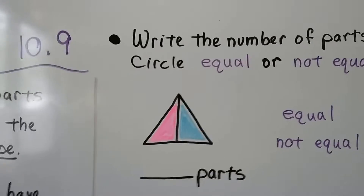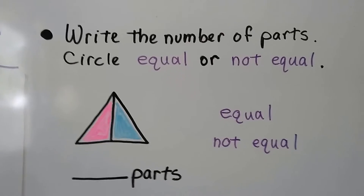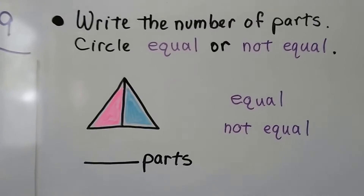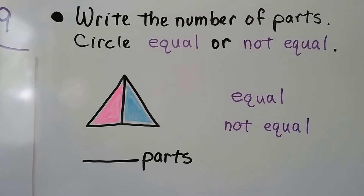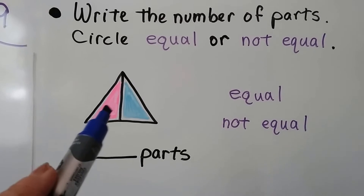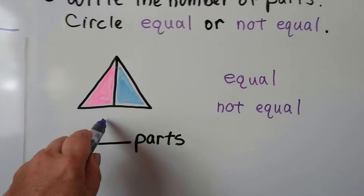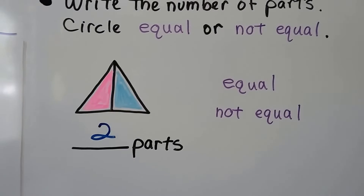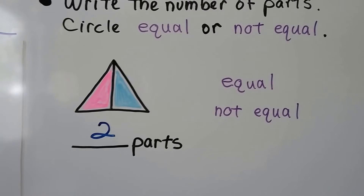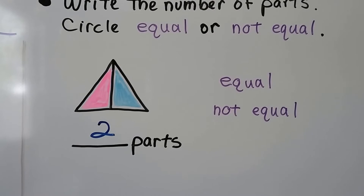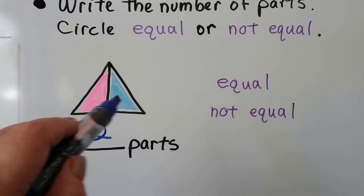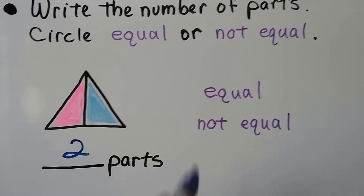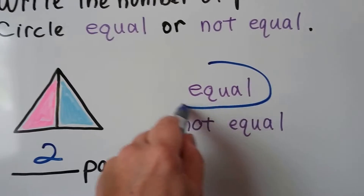We can write the number of parts and circle equal or not equal. How many parts does this triangle have? One, two — there are two parts. Are they equal? They look pretty equal. It looks like this could be a line of symmetry; we could fold this over and they would be the same. So these are equal parts.